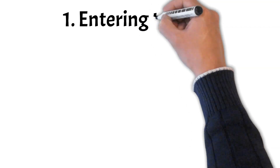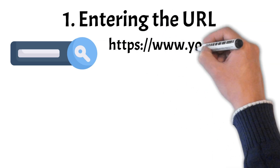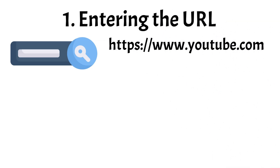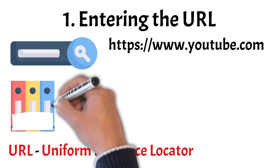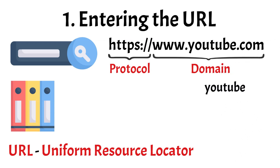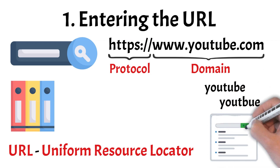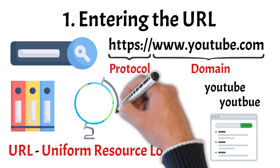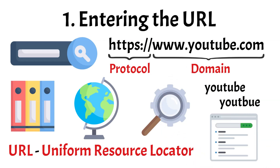When you type something into your browser's address bar, the browser first tries to understand what you meant. If you enter a full and valid URL, the browser recognizes it as a direct web address — a URL, short for Uniform Resource Locator, is a structured way to tell your browser exactly which resource you want, including the protocol, the domain name, and sometimes a path to a specific page. But if you just type a word like YouTube or accidentally misspell it, the browser won't treat it as a full URL and will typically send it to your default search engine.